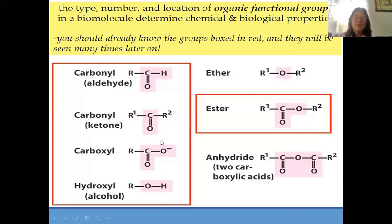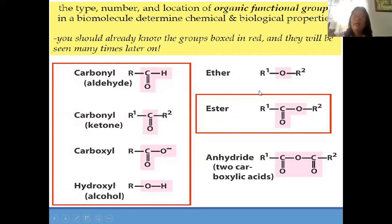What is the difference between ketone and ether? In ether, you have R1 then O then R2. In the ketone, that is R1 then C double bond O then R2. An ester is R₁ then the carbonyl group at the center, then R₂. And the anhydride — what is anhydride? There are two carboxylic acids.